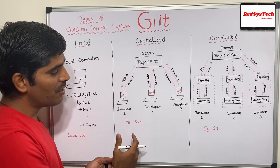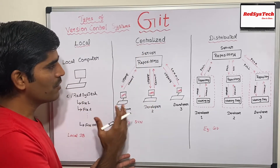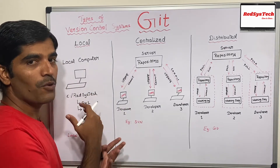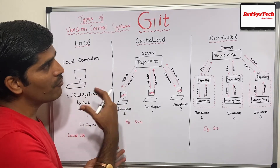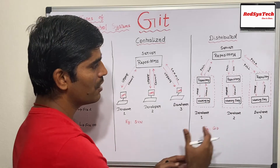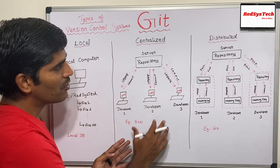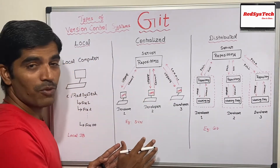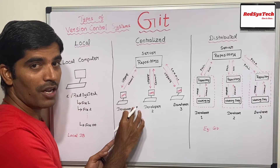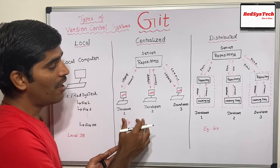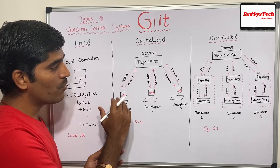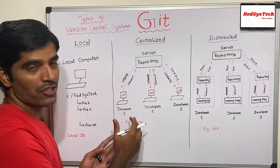The best example of centralized version control is SVN. They started with local, then evolved to centralized, and finally evolved to distributed. The drawback with centralized is that you still keep your code locally as a working directory, and if your computer crashes, developer 1's code will be lost.